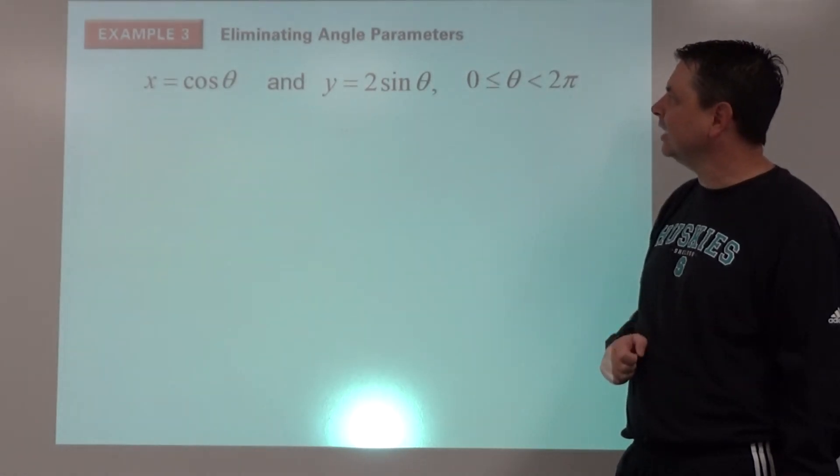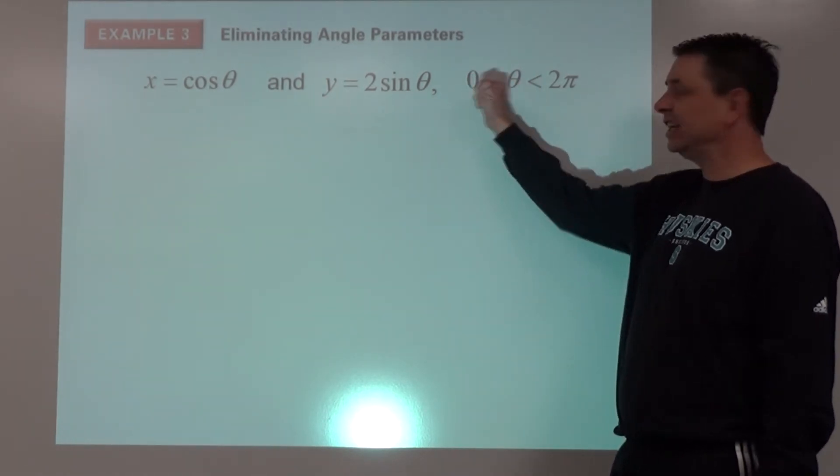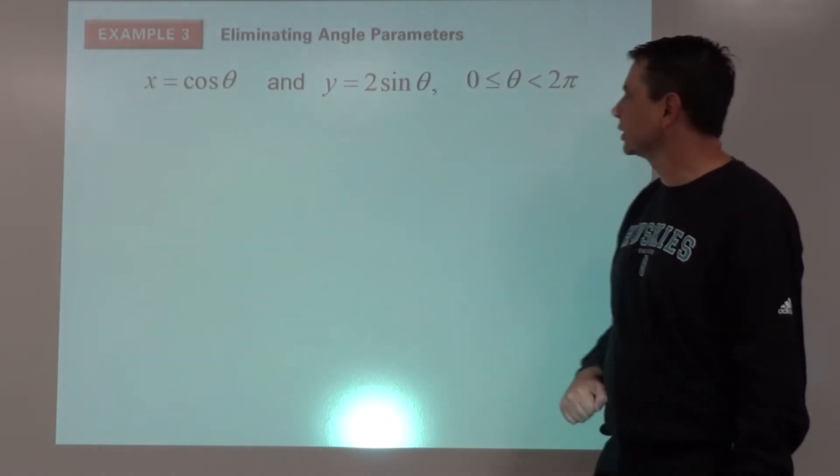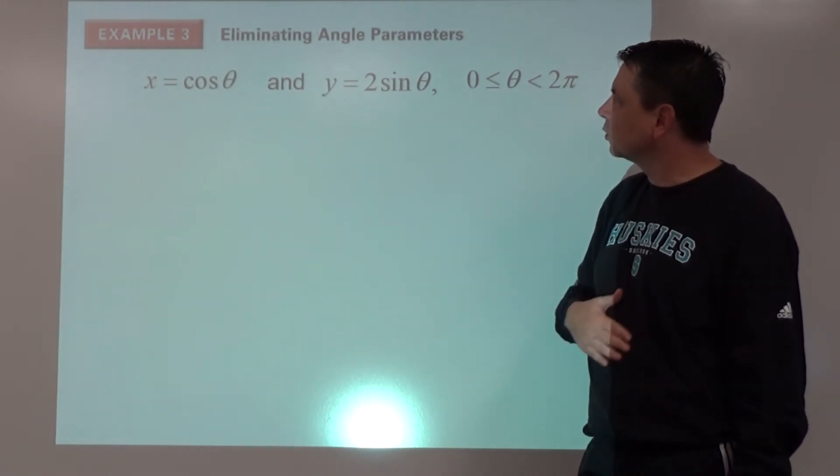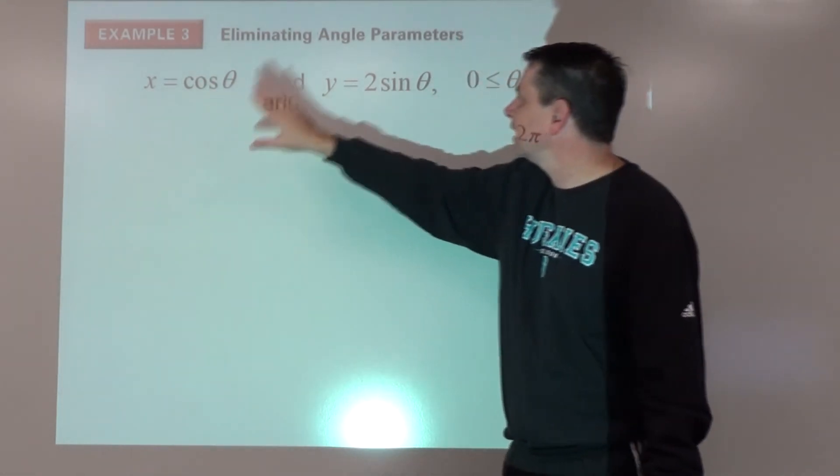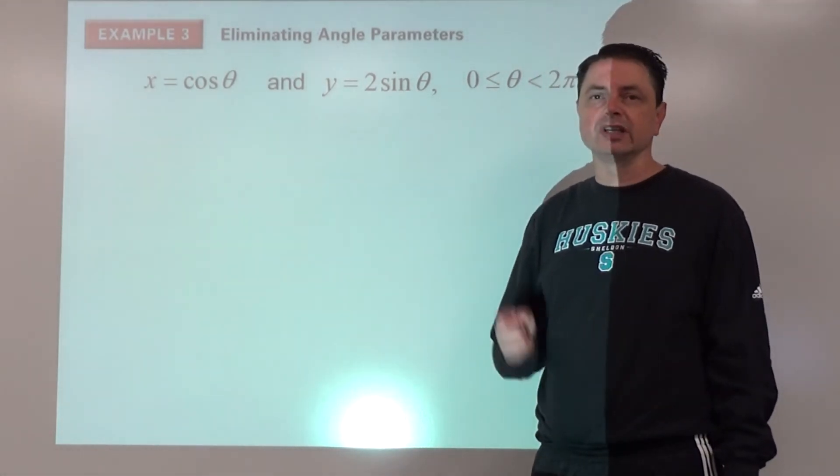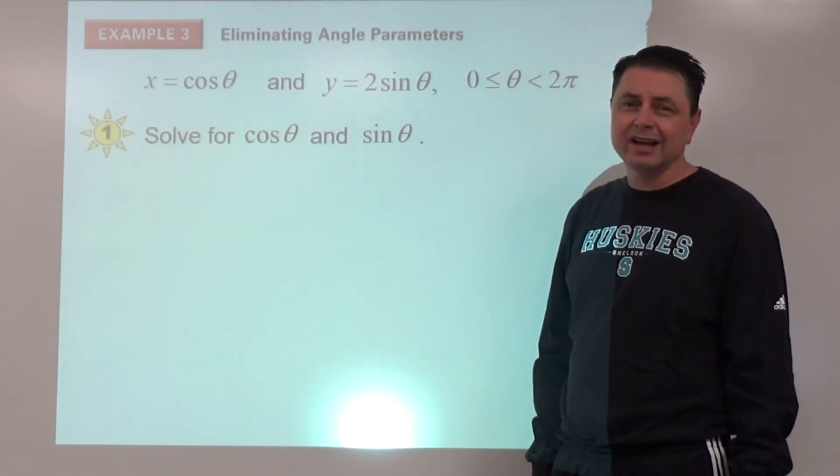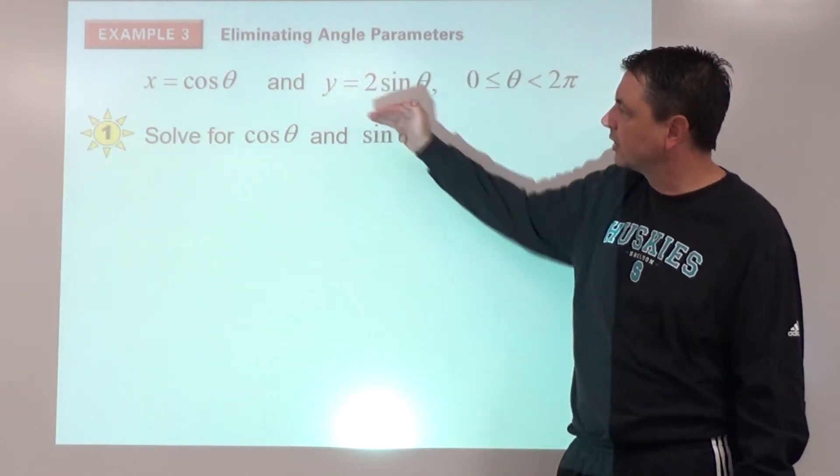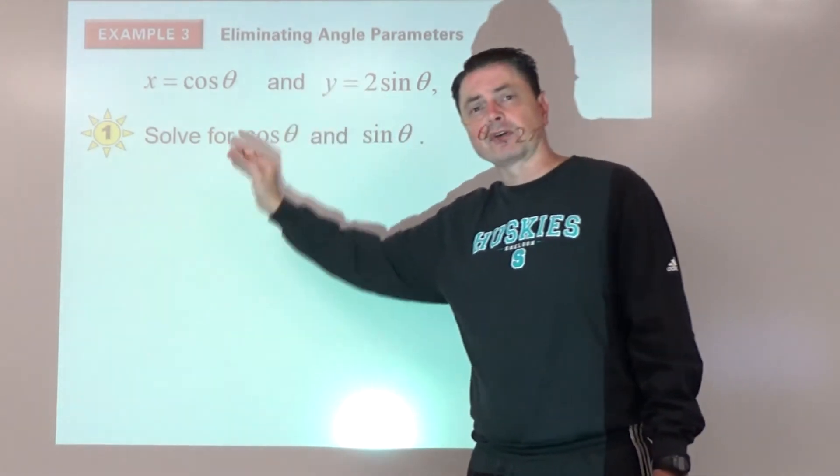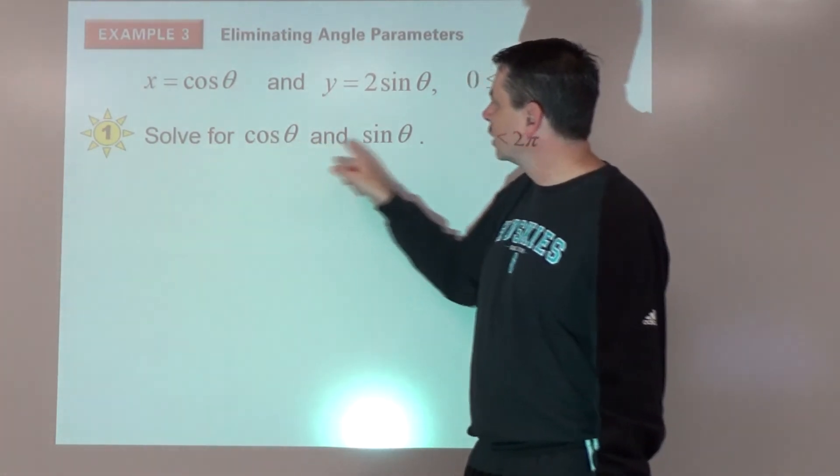Example number three: eliminating angle parameters. We've got x = cos θ, y = 2 sin θ, and here is our interval: 0 ≤ θ ≤ 2π. In order to eliminate the angle parameters, we've got to see if there's a relationship between cos θ and sin θ that doesn't involve another function. And there is our very important Pythagorean identity that sin²θ + cos²θ = 1. Before there, step number one is always we're going to solve. This time, instead of solving for theta, we're going to solve for one of the functions, cos θ or sin θ. And we're going to solve for both of them. This one, we're going to divide both sides by 2.